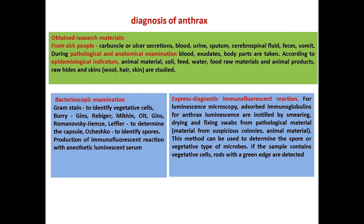Diagnosis of anthrax: research materials from sick people include carbuncle or ulcer secretions, blood, urine, sputum, cerebrospinal fluid, feces, and vomit. During pathological and anatomical examination, blood, exudates, and body parts are taken. According to epidemiological indicators, animal materials, soil, feed, water, food, raw materials, animal products, raw hides, and skins are studied.